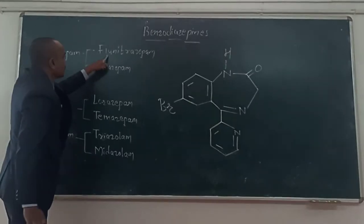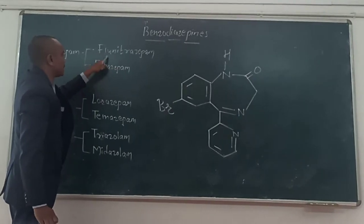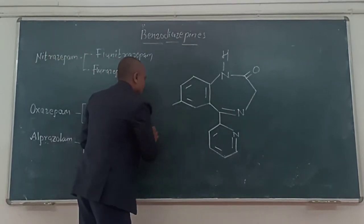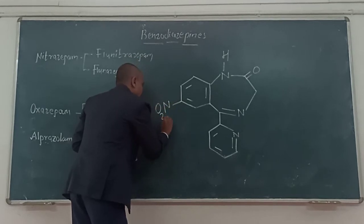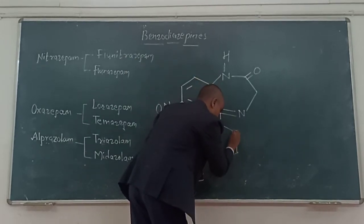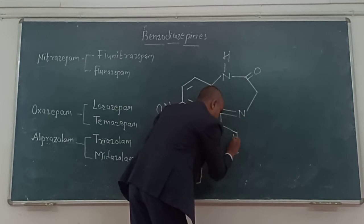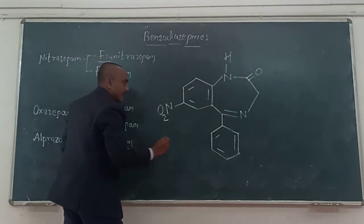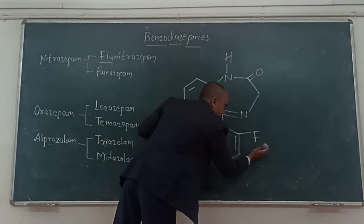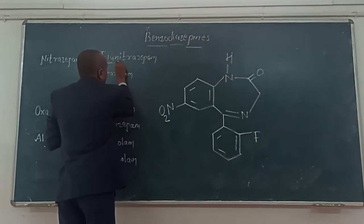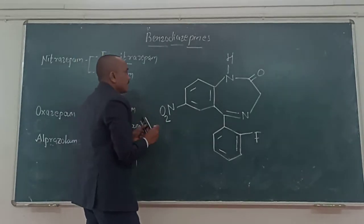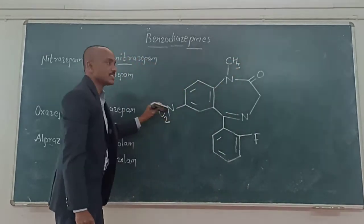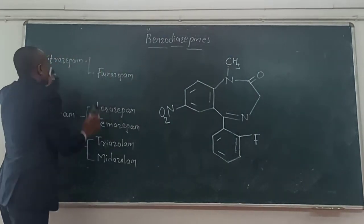There are two more drugs, flunitrazepam and flurazepam, that we can prepare from the nitrazepam structure. For flunitrazepam: it contains the presence of a fluorine atom at the second position of the benzodiazepine ring, a nitro group, and one more change — it contains a methyl group. So this is the structure for flunitrazepam prepared from nitrazepam.